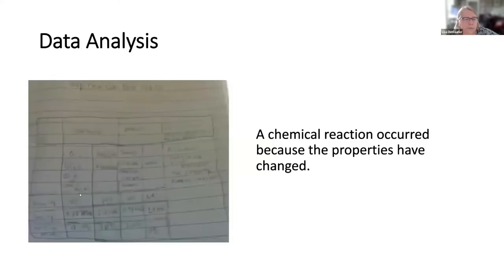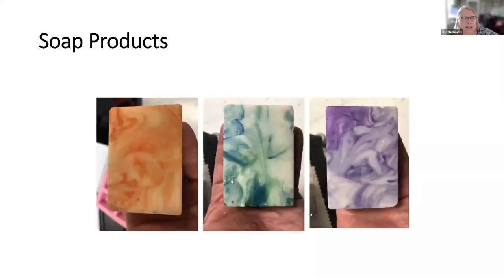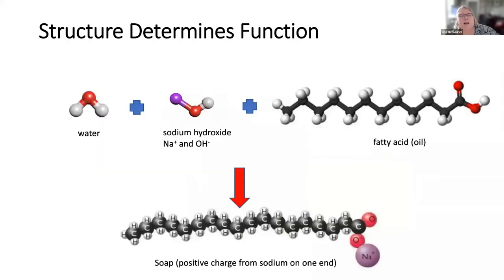And then they compare it with these properties of the product after they make the soap and then identify whether a chemical reaction occurred and how would you know. And so here's a sample data table with all those numbers and they can look and see these numbers changed. So a chemical reaction occurred. So do some data analysis. Just a picture of what some of their soap might look like. They wanted to make different colors.